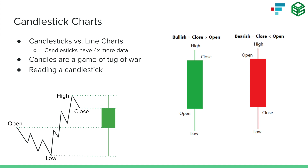You can think of a candlestick as a game of tug of war — a battle that goes on each day between buyers and sellers. A candlestick allows us to see who is in the lead at different points of the day and who ended up winning. If you look at a candlestick and turn it sideways, buyers are on the left, sellers are on the right, and we're tugging back and forth. The candlestick shows us all of this information about the battle that went on that day.